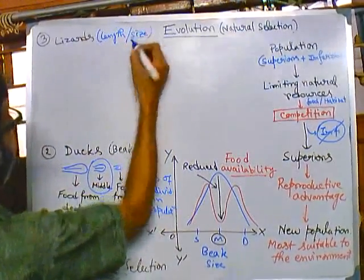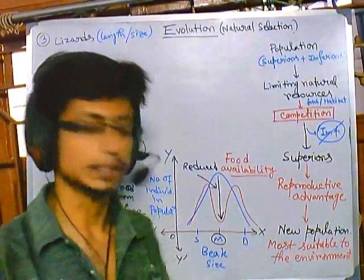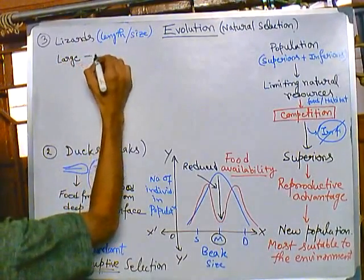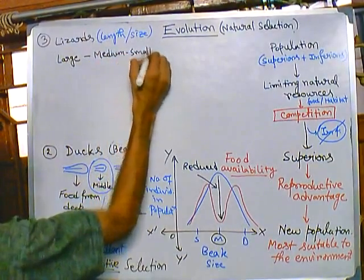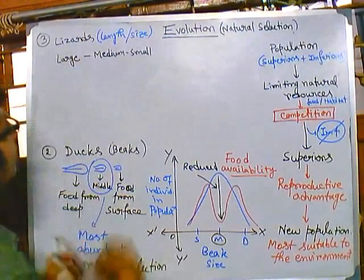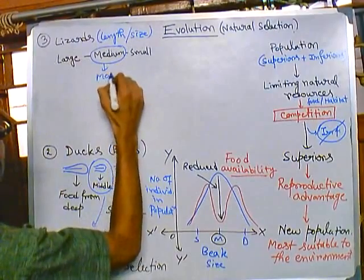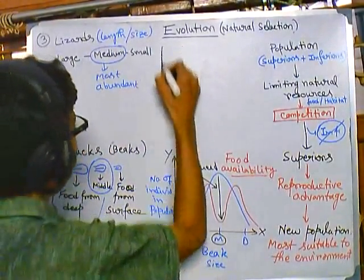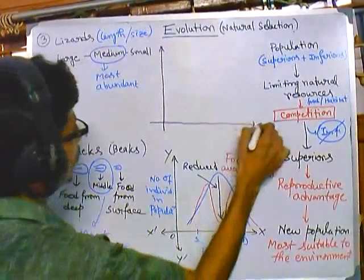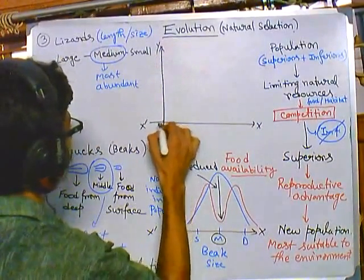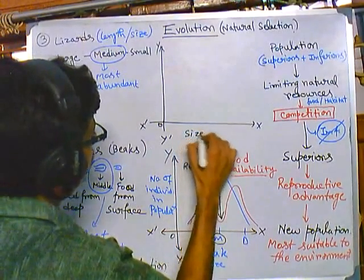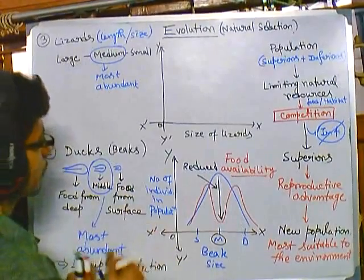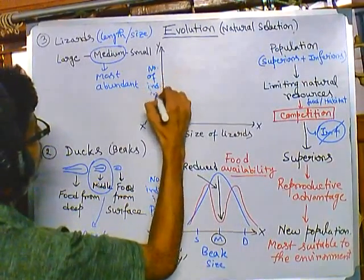Inside this population there are three different sizes of lizards: large, medium, and small. The medium-sized lizards are the most abundant. If we draw a graph with body size of lizards on the x-axis and number of individuals in the population on the y-axis...